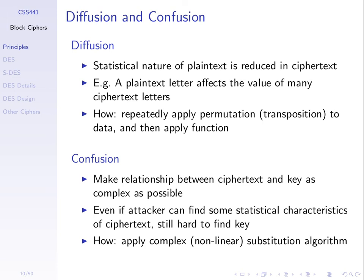Interestingly, diffusion and confusion as concepts were defined by Claude Shannon — the same Shannon who defined channel capacity (C = B·log(1 + S/N)) for data communications links. Shannon also analyzed ciphers and developed these concepts of what constitutes an ideal cipher, what confusion and diffusion mean. Shannon made a large contribution to both data communications and to security and cryptography.